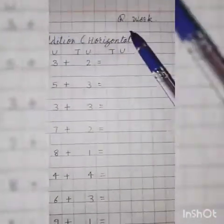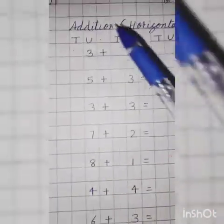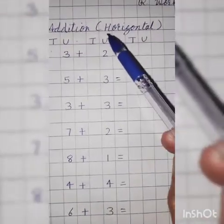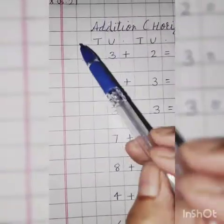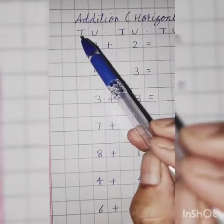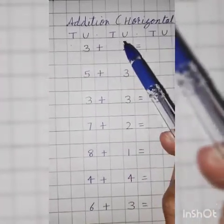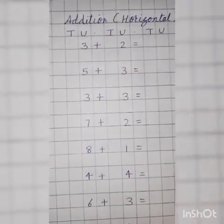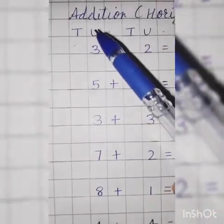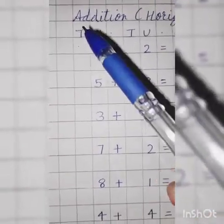So mention today's date, revision work, heading, addition, horizontal. Leave two boxes and write down TU dot TU dot TU. Okay, U stands for units and T stands for tens.